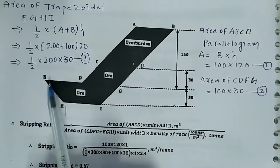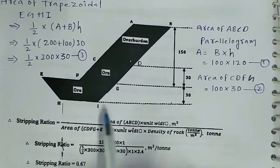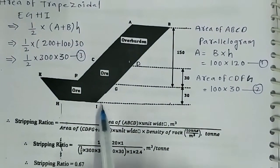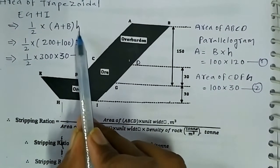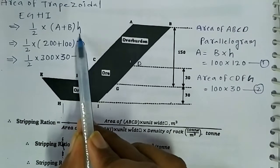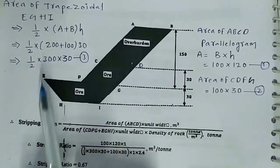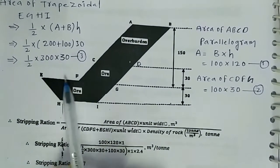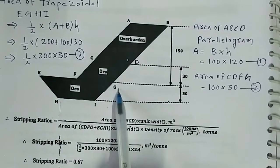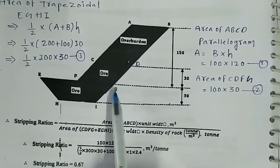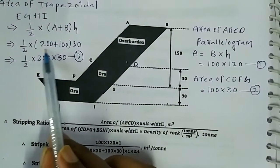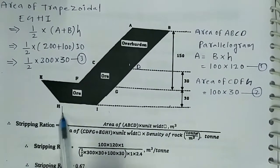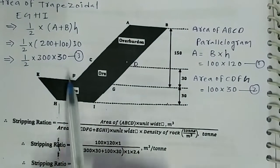The area of trapezoidal EGHI - this EGHI is the trapezoidal. Half of A plus B into height, this is the formula of trapezoidal. Here, half into A is 200 - E to F and F to G is the long base. The base is 200. HI is the short base, 100 is the short base.